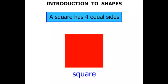And a square has four equal sides. One, two, three, four. So four equal sides, and of course those sides are straight.